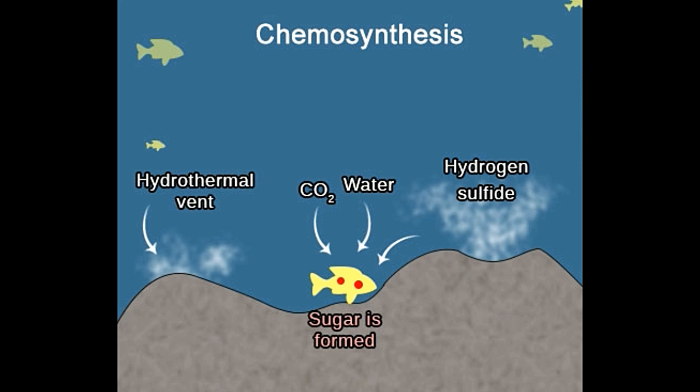Byproducts: In photosynthesis, where light energy is used to combine water and carbon dioxide, it releases oxygen as a byproduct. In chemosynthesis, sulfur compounds are generated as byproducts.